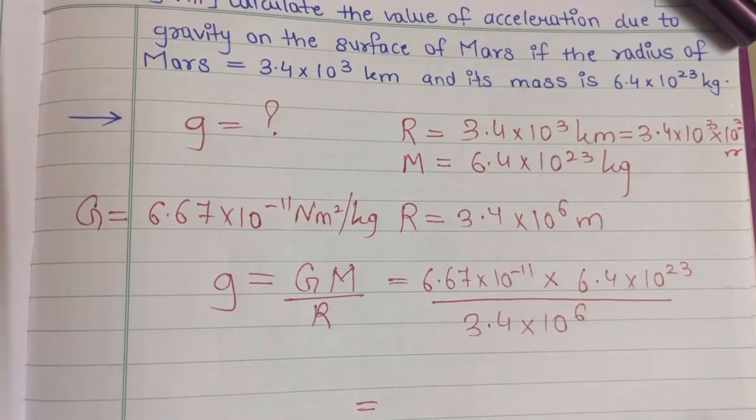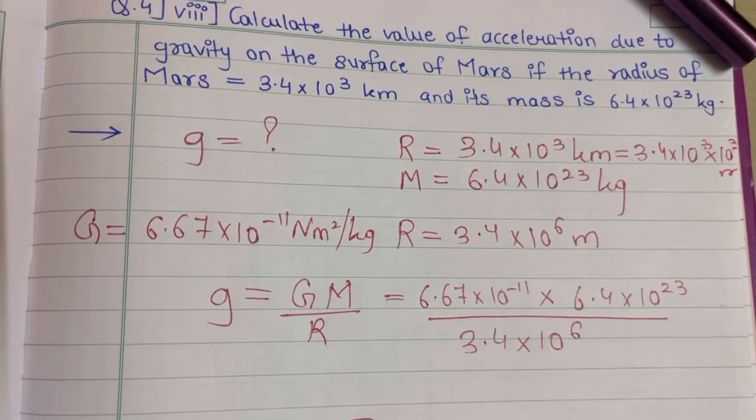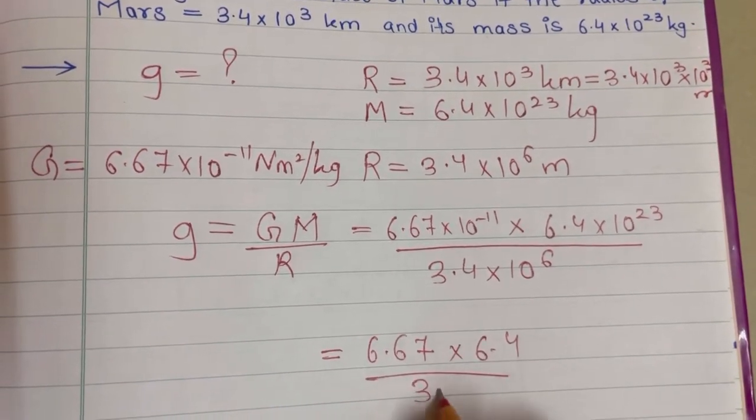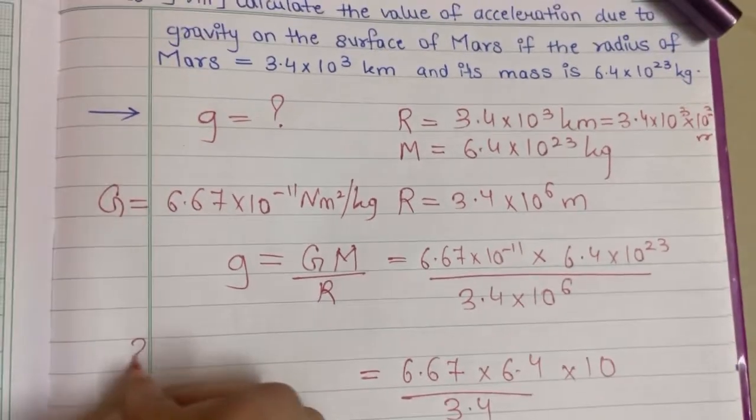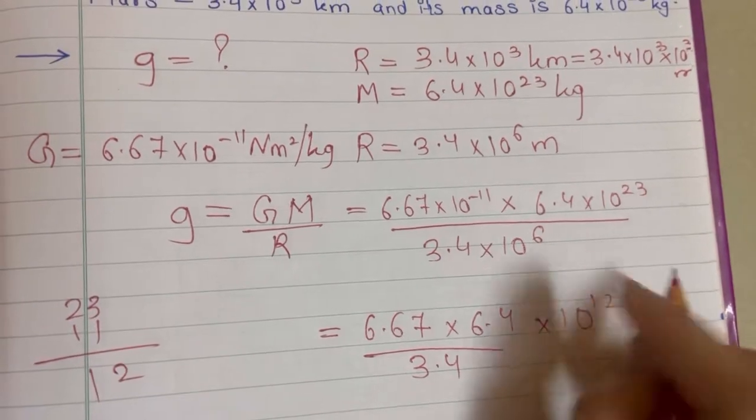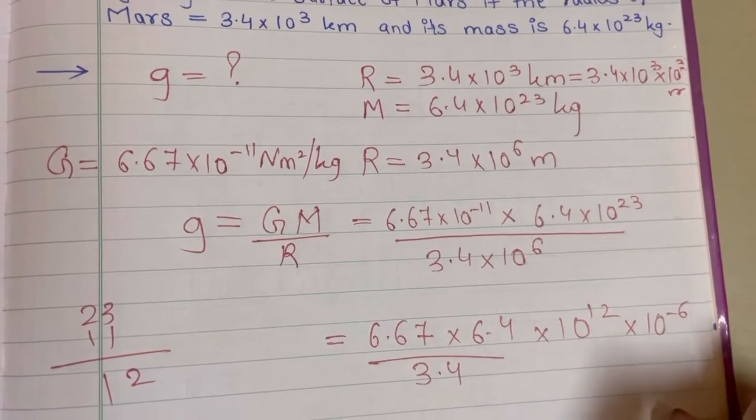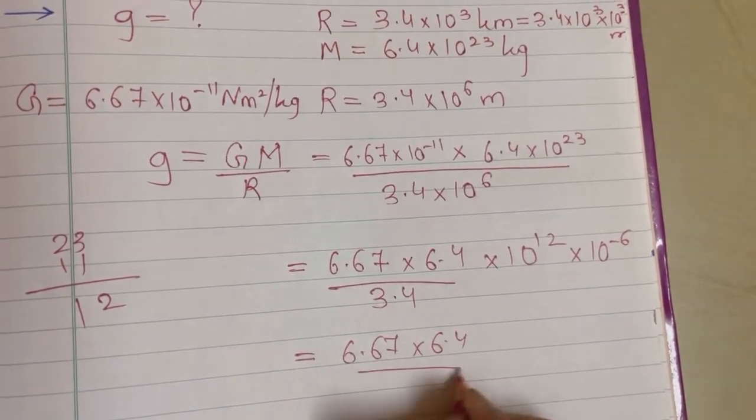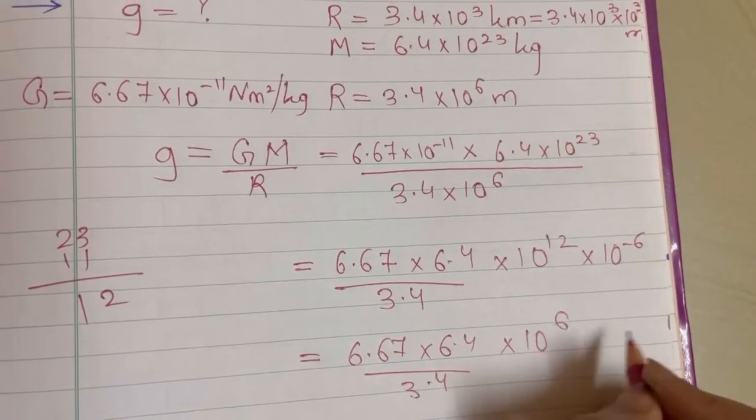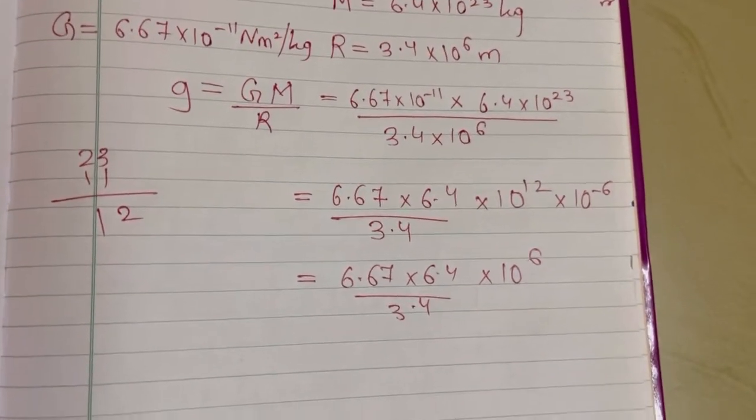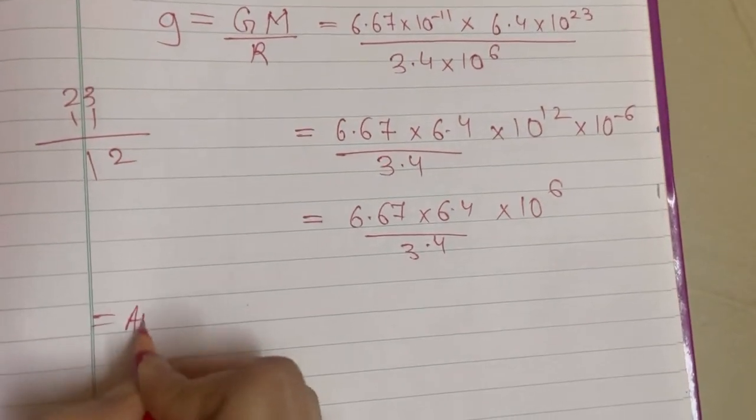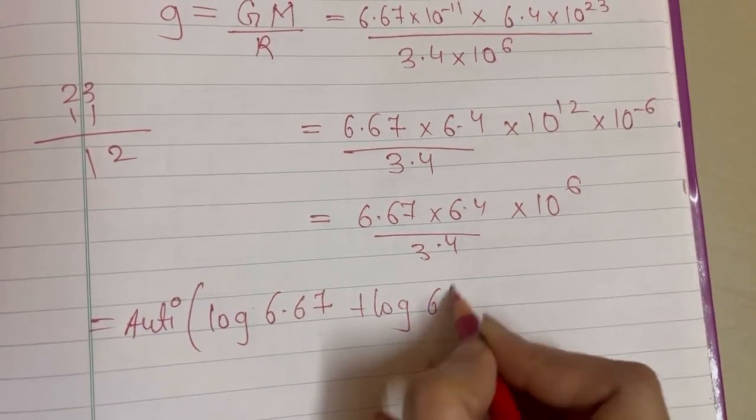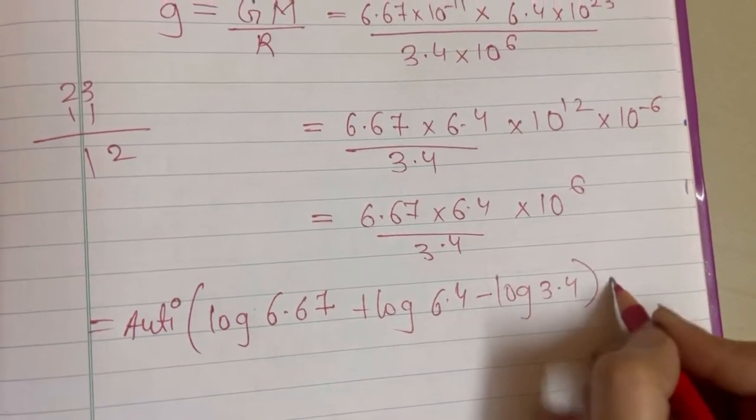Simplifying the exponents: 10⁻¹¹ and 10²³ gives us 10¹² (23 minus 11 equals 12). Then 12 minus 6 leaves us with 10⁶. So we have (6.67 × 6.4 / 3.4) × 10⁶. Now we can apply logarithms.